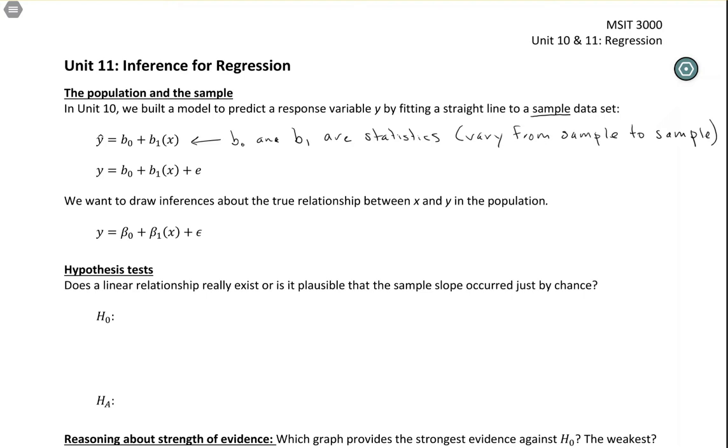We've written it in terms of the predicted values. We could also write an equation in terms of actual values, but we'd have to include the residuals, because our points aren't going to be exactly on the line. E, the residual, is the distance between the actual and predicted values.